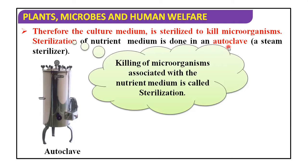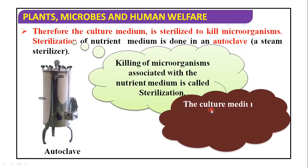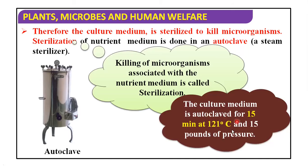What is an autoclave? It is a steam sterilizer. In this autoclave, steam is generated, and we can keep our nutrient medium in a petri dish inside it. After sterilization, we can use it. The use of the autoclave is to kill microorganisms associated with the nutrient medium — that is known as sterilization. The culture medium is autoclaved for 15 minutes at 121 degrees centigrade and 15 pounds of pressure.